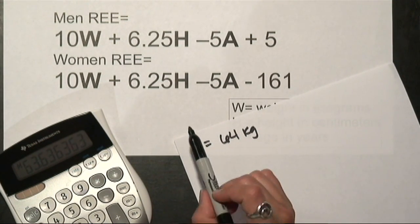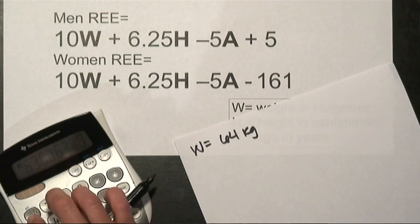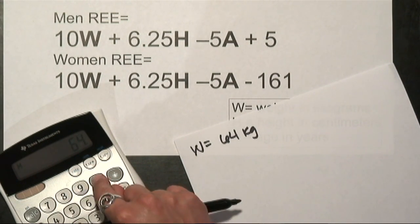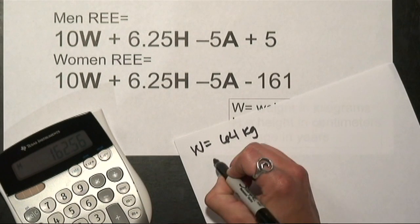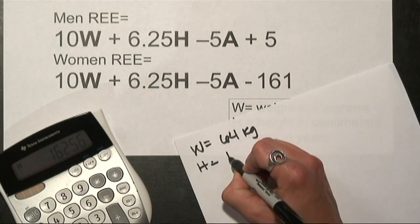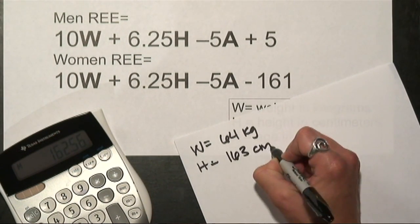I also know I'm 5'4, so that's about 64 inches. 64 times 2.54 will convert that to centimeters. I'm approximately 163 centimeters.